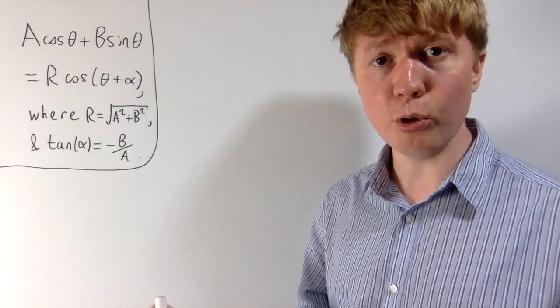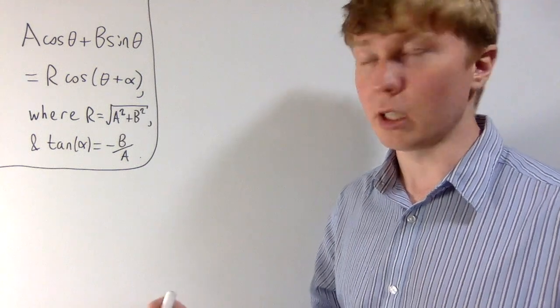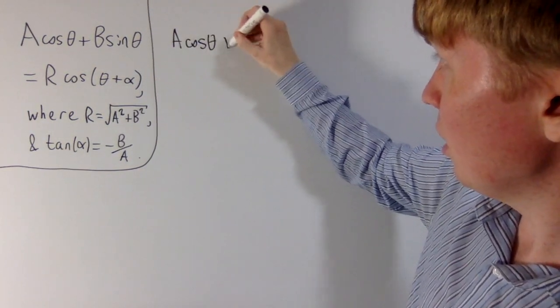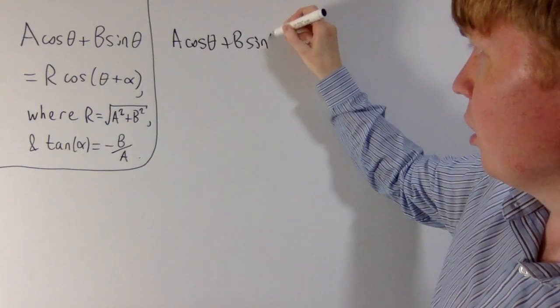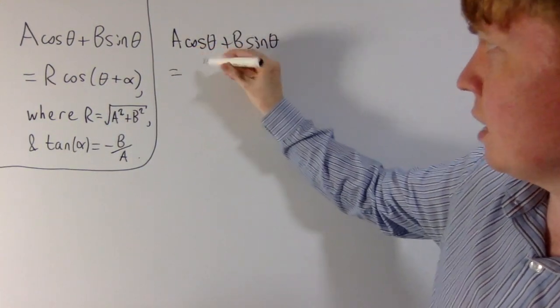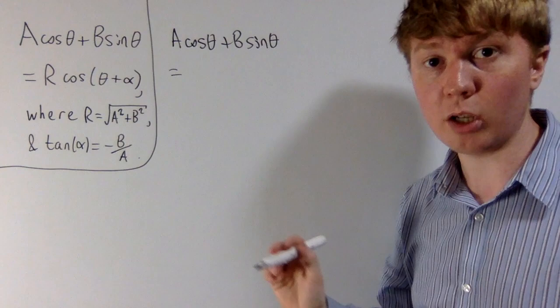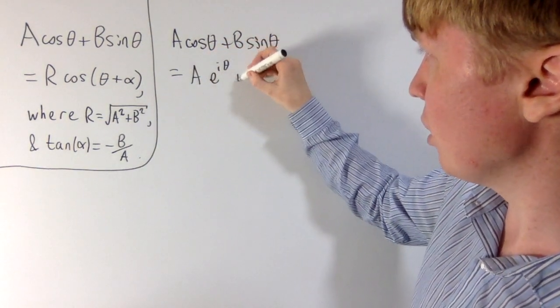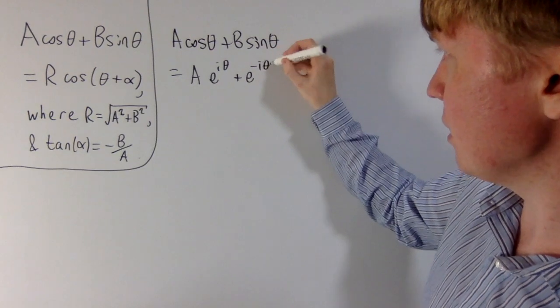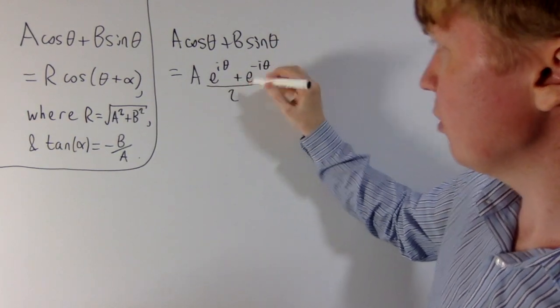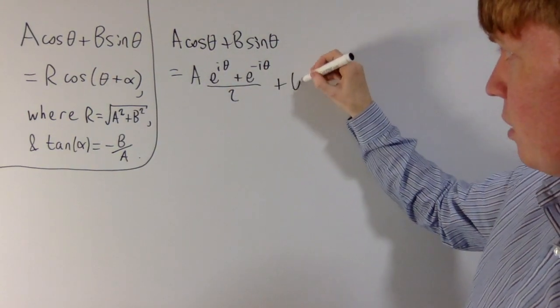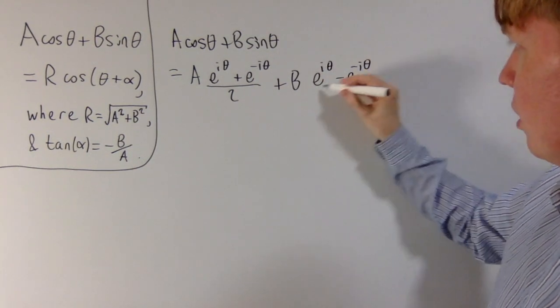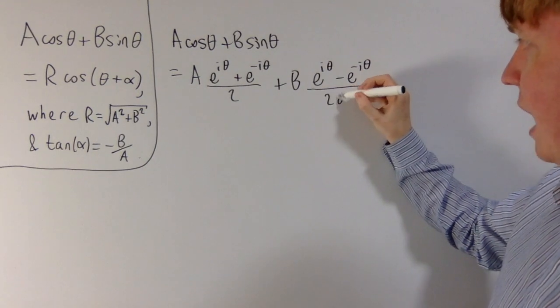What we're going to do is have a look at a nice proof of this theorem using complex numbers. So we start off with A cos theta plus B sine theta. First of all, we'll write these cos theta and sine theta in their complex exponential form. So we get A e to the i theta plus e to the minus i theta all over 2 for our cos theta term, and then plus B e to the i theta minus e to the minus i theta, all divided by 2i.